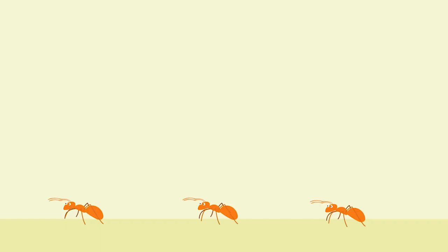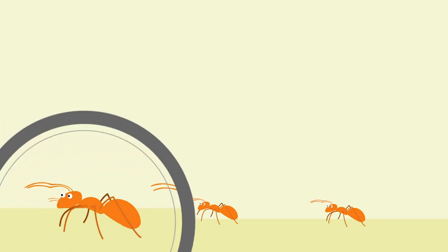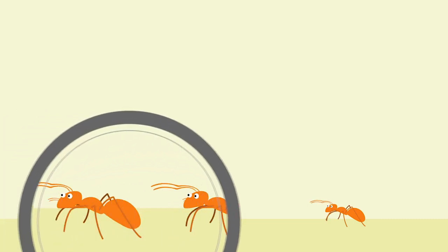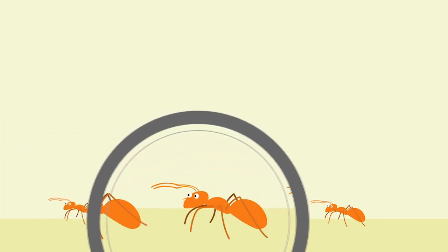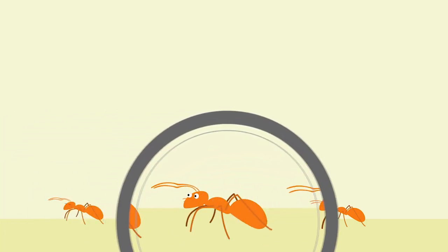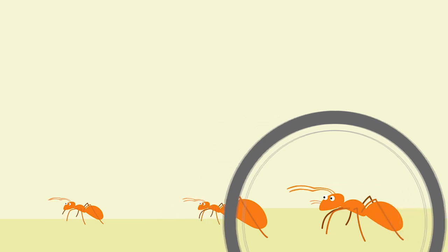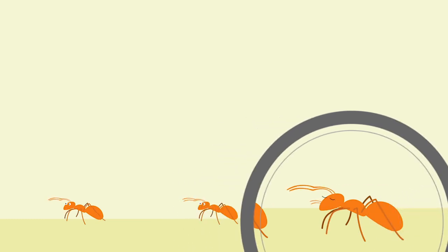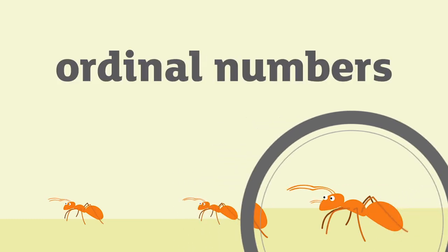Other numbers tell us about order and position. For example, this ant is first, this ant is second and this ant is third in line. These are called ordinal numbers.